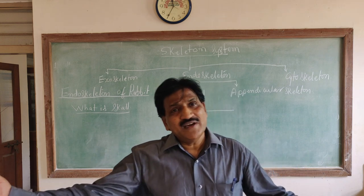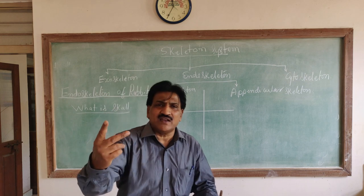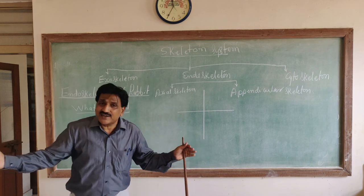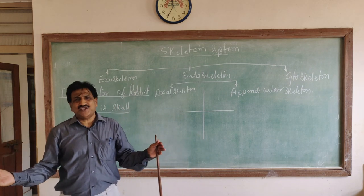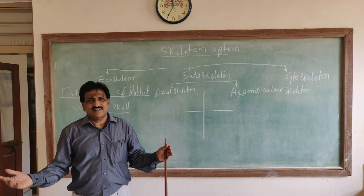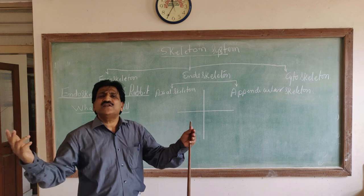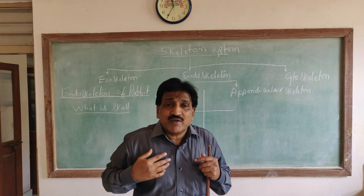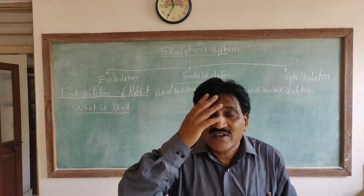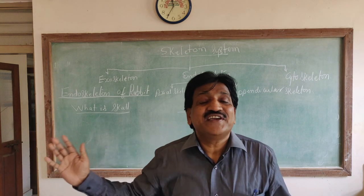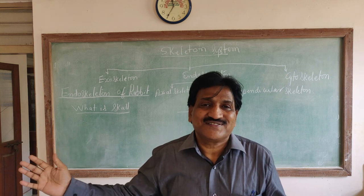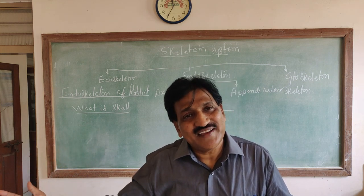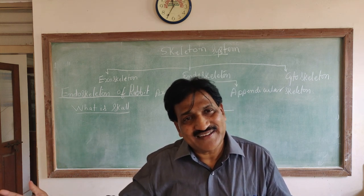Whereas mammals have two occipital condyles — dicondylic in nature — so our head can rotate only 90 degrees.